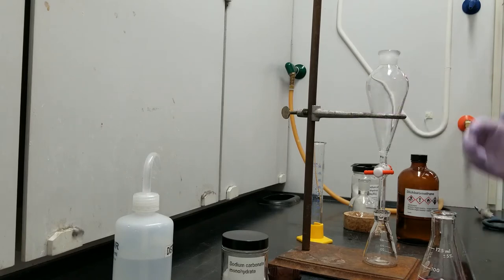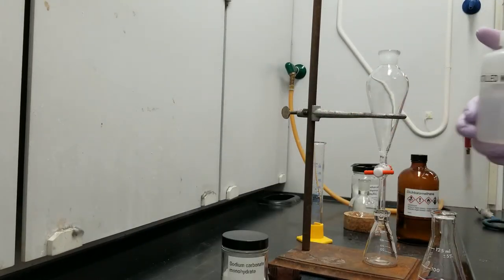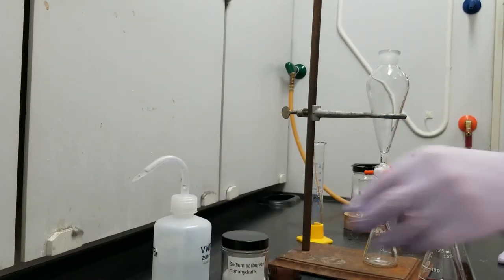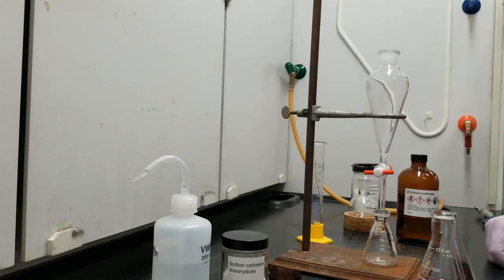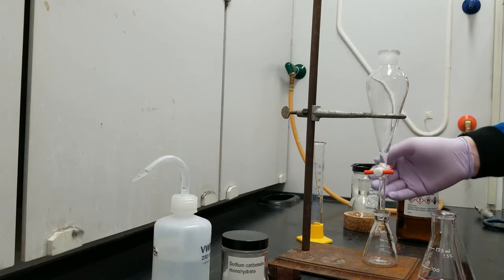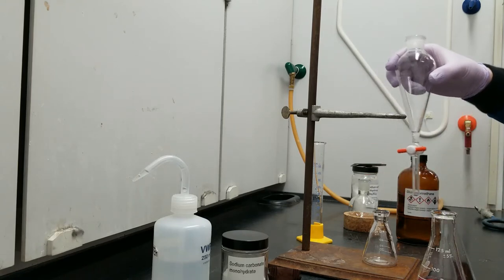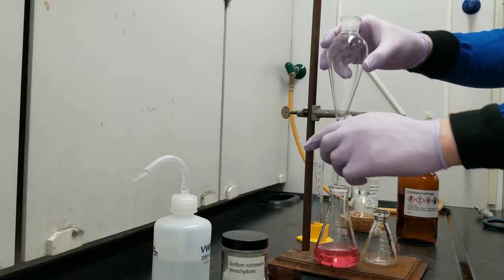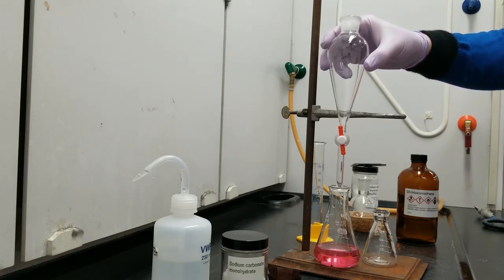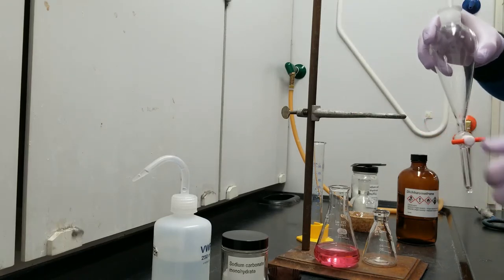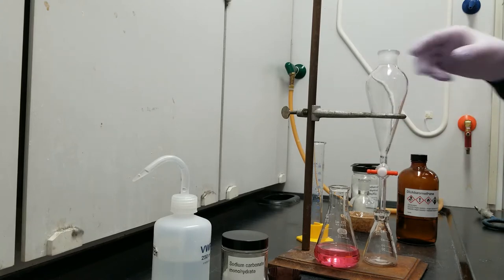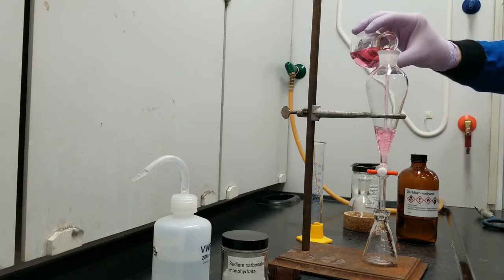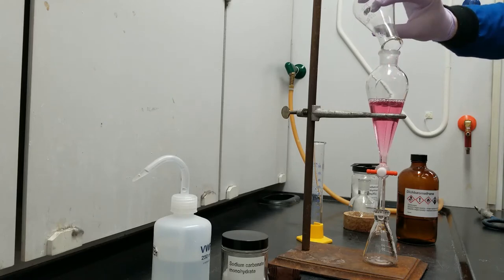Before I use my sep funnel, I'm going to do just a quick leak check. This is a bottle of distilled water. You can see that in the closed position, this is not going to allow any water through. But if I open it up just into the energy drink because it's just water, that's going to allow water to flow through. So good on leaks, ready to do this. And I'm going to add my energy drink to the sep funnel.